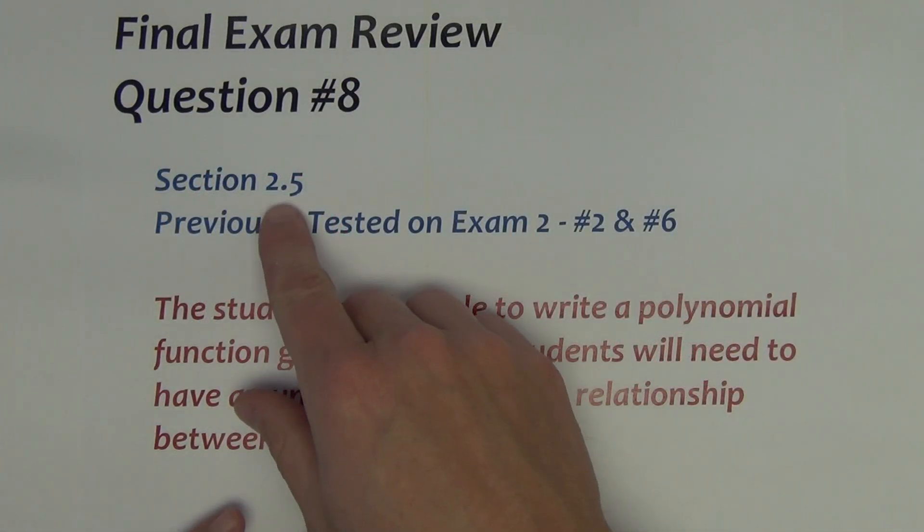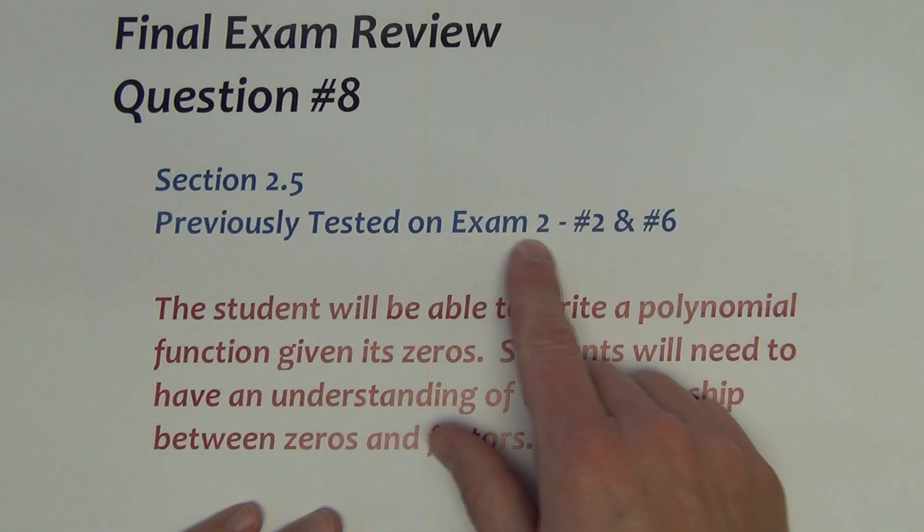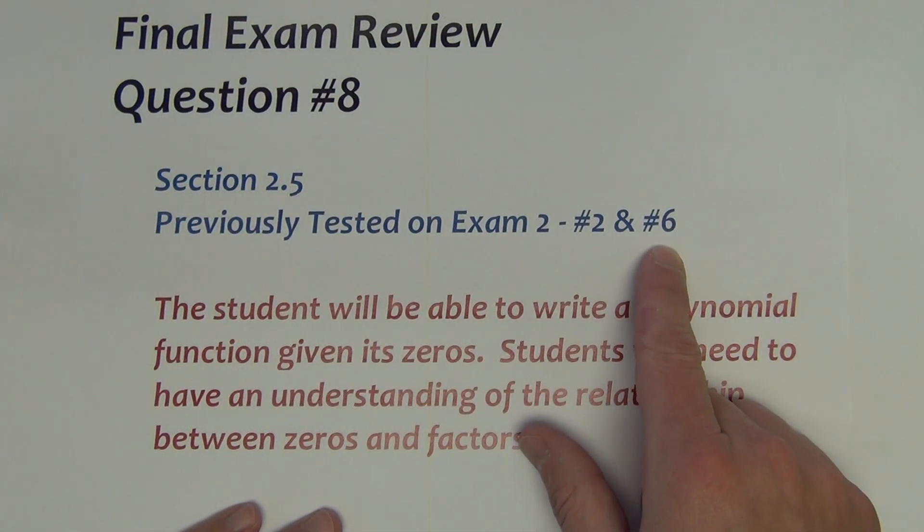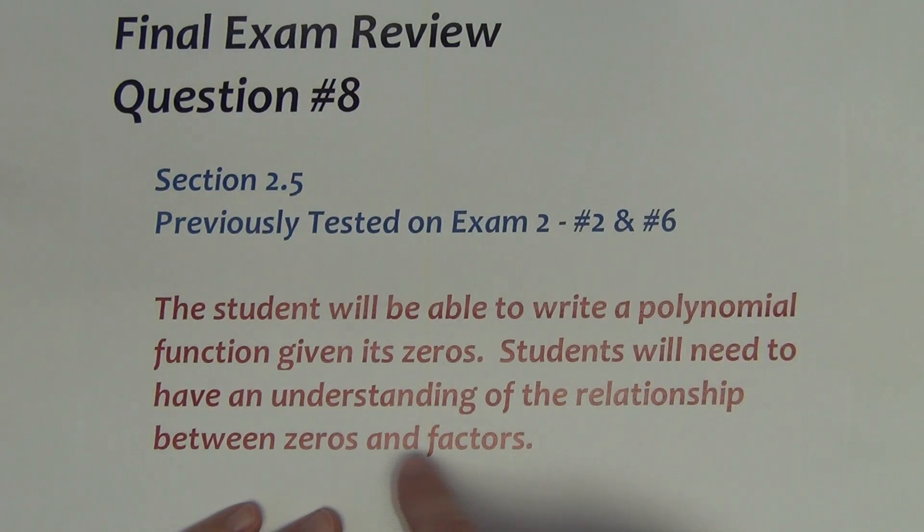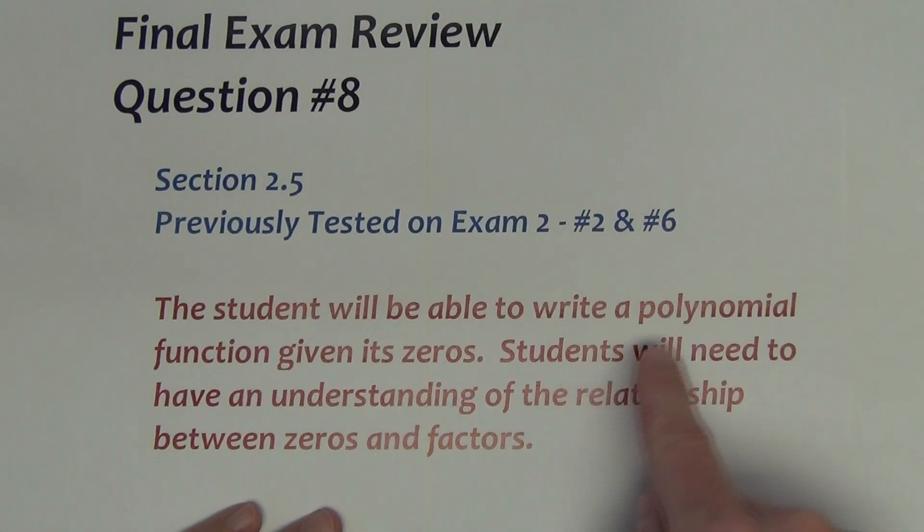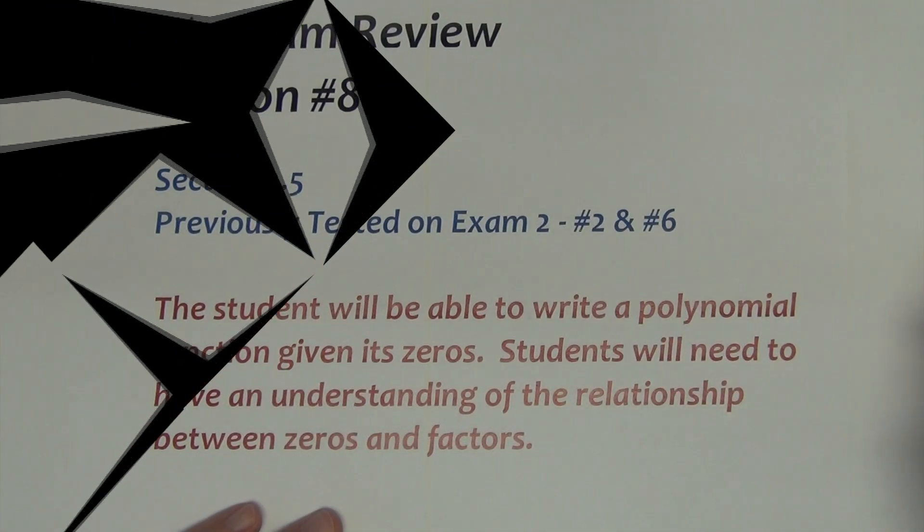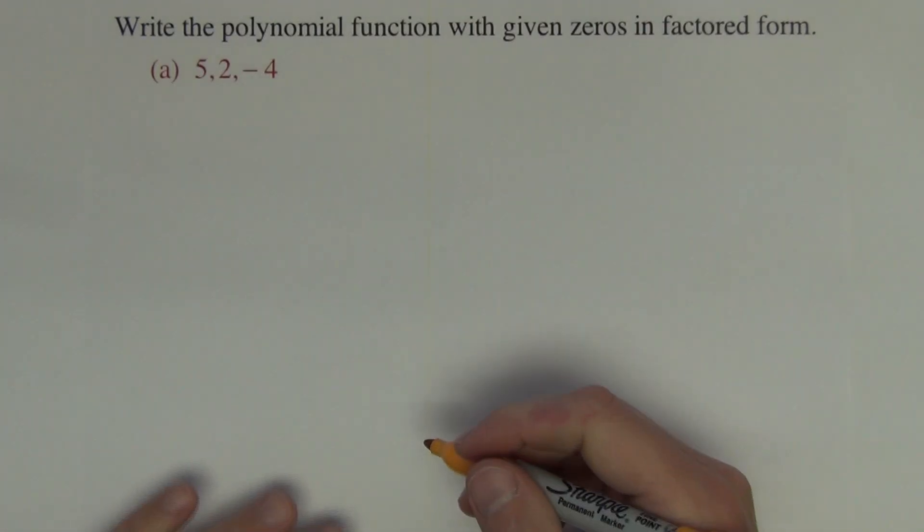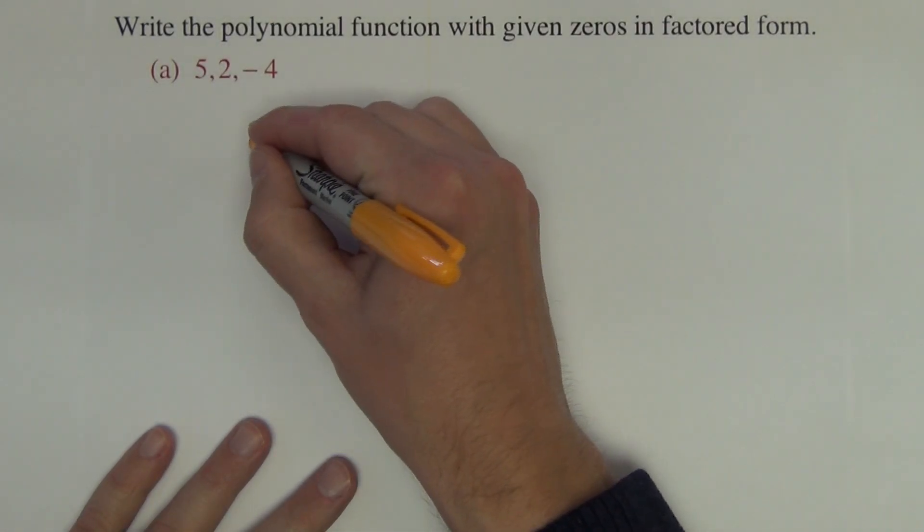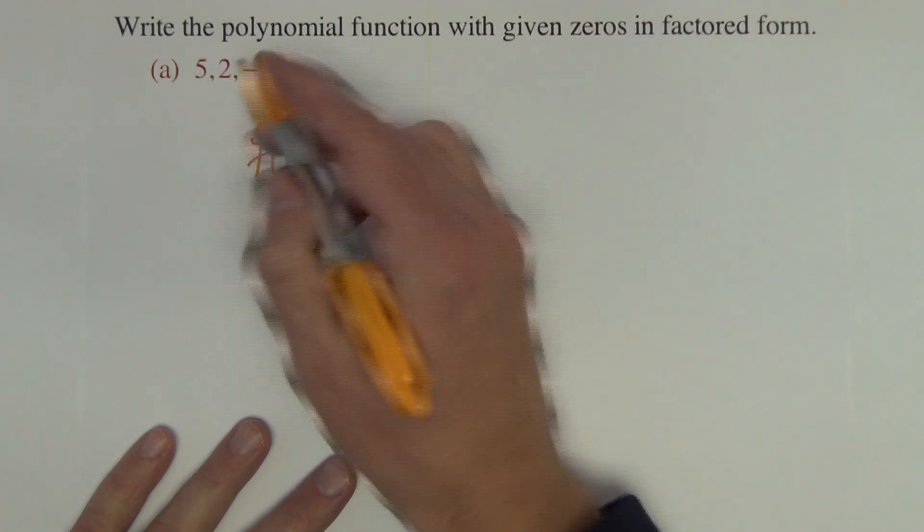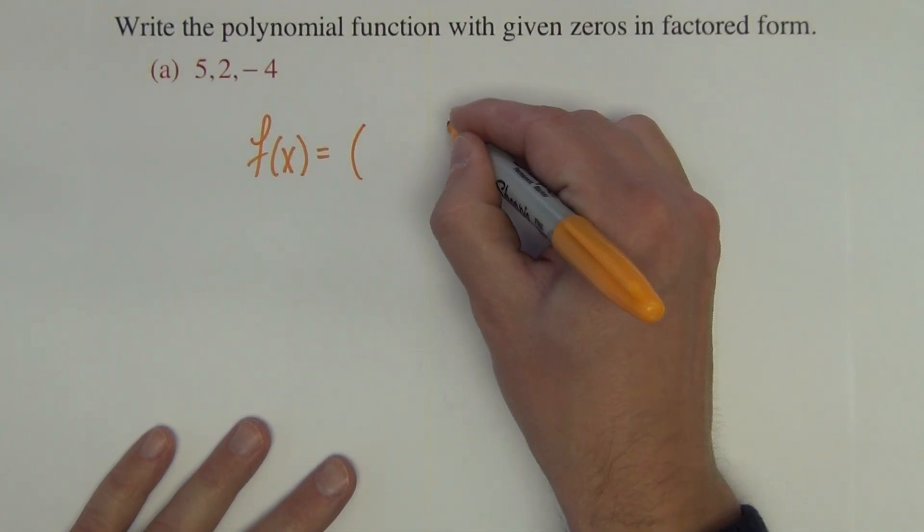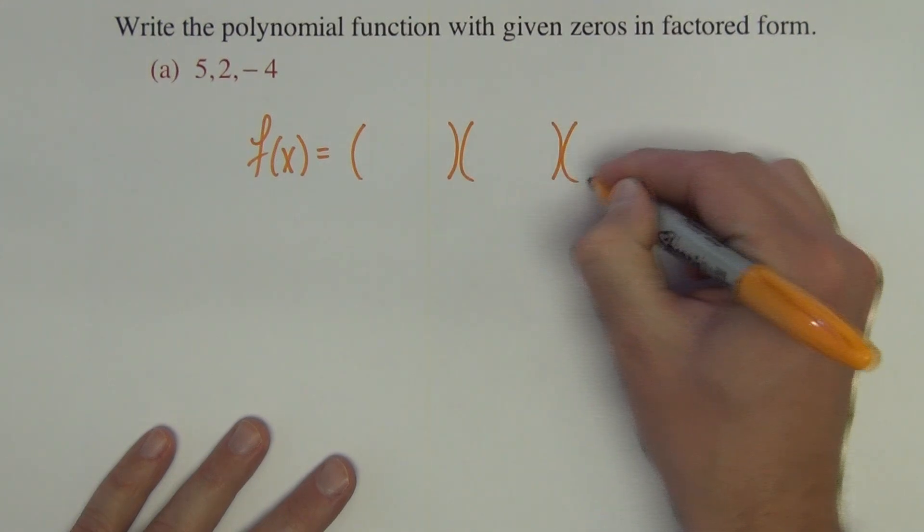Next question comes from section 2.5, previously taught on exam 2, numbers 2 and 6. This particular question is going to test whether you know the relationship between zeros and factors of polynomial functions. Directions asks you to write the polynomial function with given zeros in factored form. So we need a polynomial function in factored form. There are three zeros, so there will be three factors.